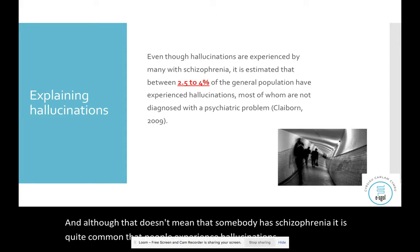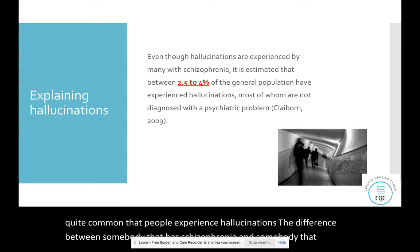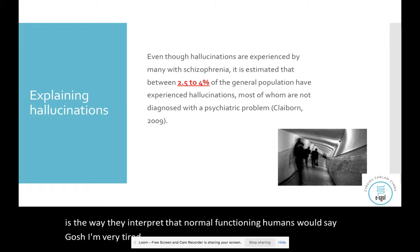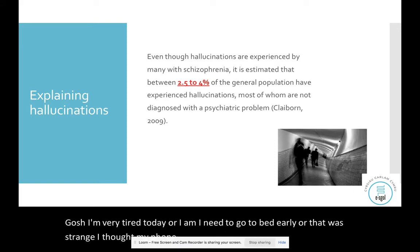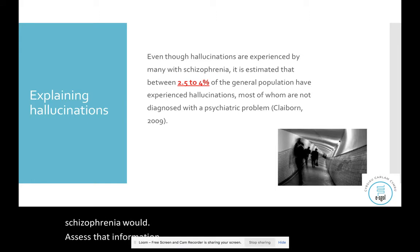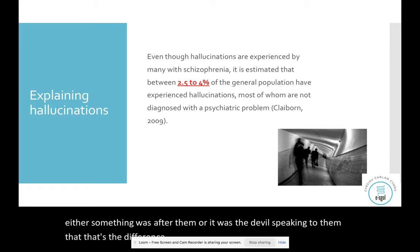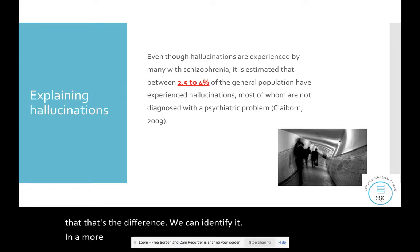The difference between somebody who has schizophrenia and somebody who doesn't is the way they interpret hallucinations. Normal functioning humans would say 'oh I'm very tired' or 'that was strange.' Whereas people with schizophrenia would assess that information inappropriately — thinking something was after them or that it was the devil speaking to them. We can identify hallucinations in a rational way, whereas people with schizophrenia always think that something bad is going to happen.